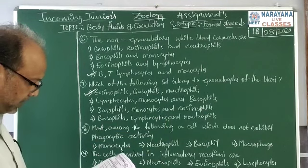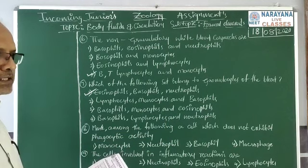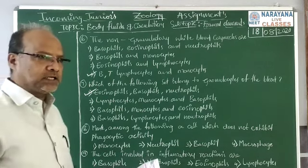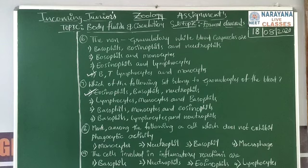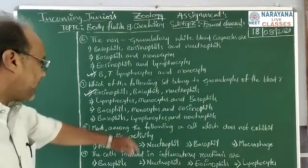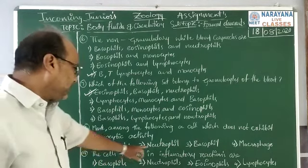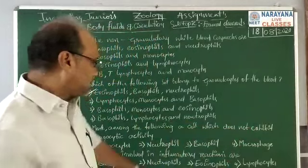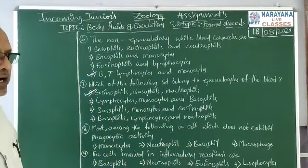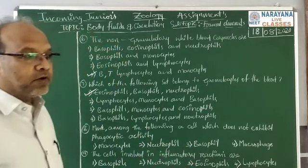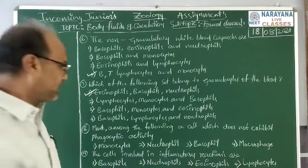Next question: mark among the following a cell which does not exhibit phagocytic activity. Among the various WBCs, some are involved in allergic reaction, some in phagocytic activity, some in inflammatory activity. The choices are: monocytes, neutrophils, basophils, macrophages. Except basophils, all the cells — monocytes, neutrophils, and macrophages — exhibit phagocytic activity. But basophils only exhibit inflammatory functions. So the answer is basophils.